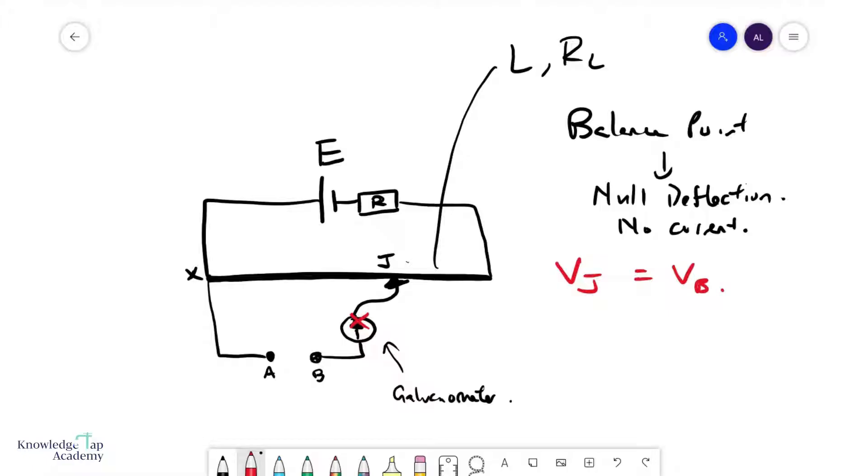We can also see that on this side these are equal potential points, so Vx equals Va. What I can then conclude is that the potential difference across xj and the potential difference across ab is the same, so Vxj equals Vab.